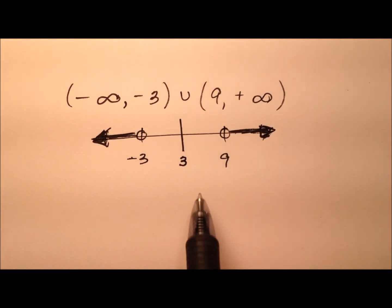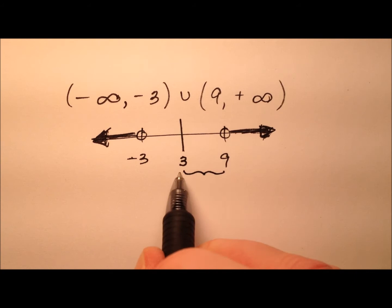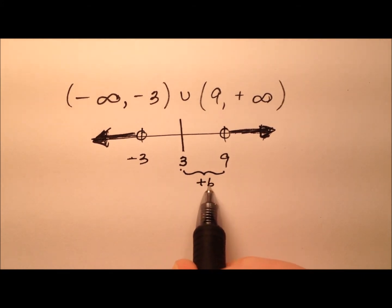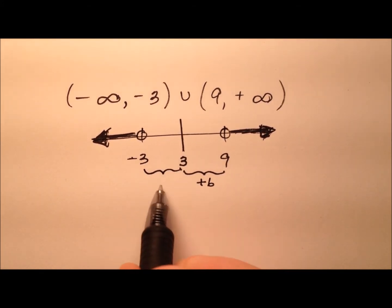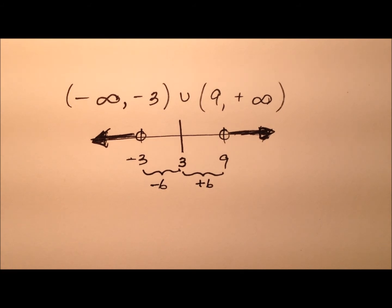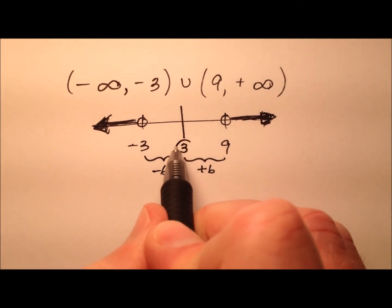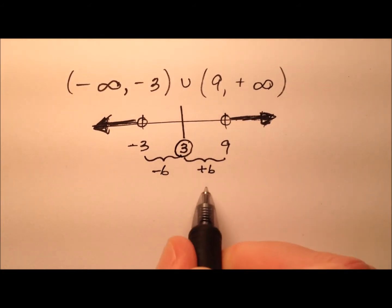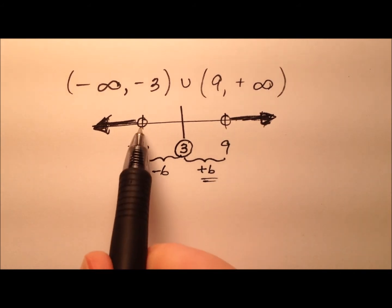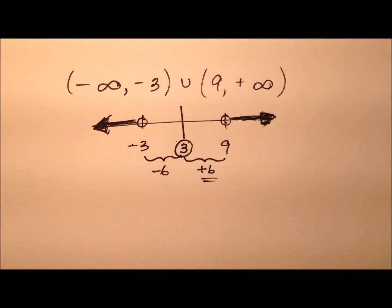So it looks like the number in the middle is positive 3, and then the distance here is we've gone up 6, or if we go back this way we've gone down 6. So we know the value in the middle is 3, and then this distance here that each of these values are from the middle is 6.